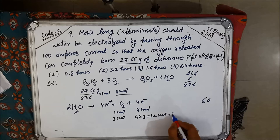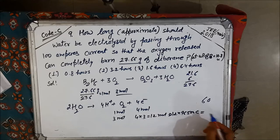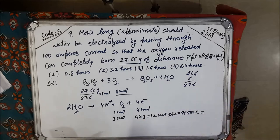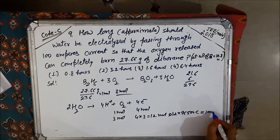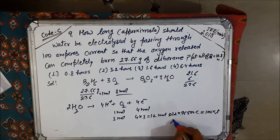So 12 moles of electrons means 12 into 96,500 coulombs. This is the charge required and that equals I into T. Now I into T, I is 100 amperes, time in seconds.